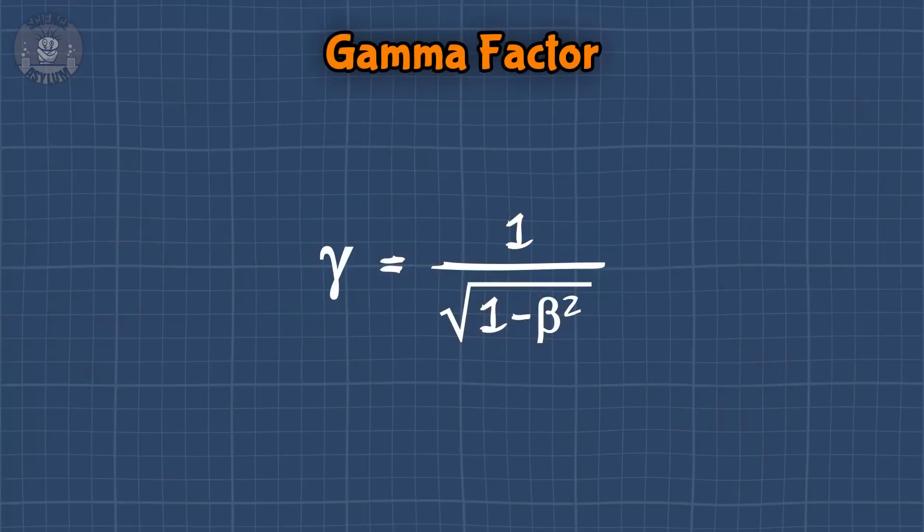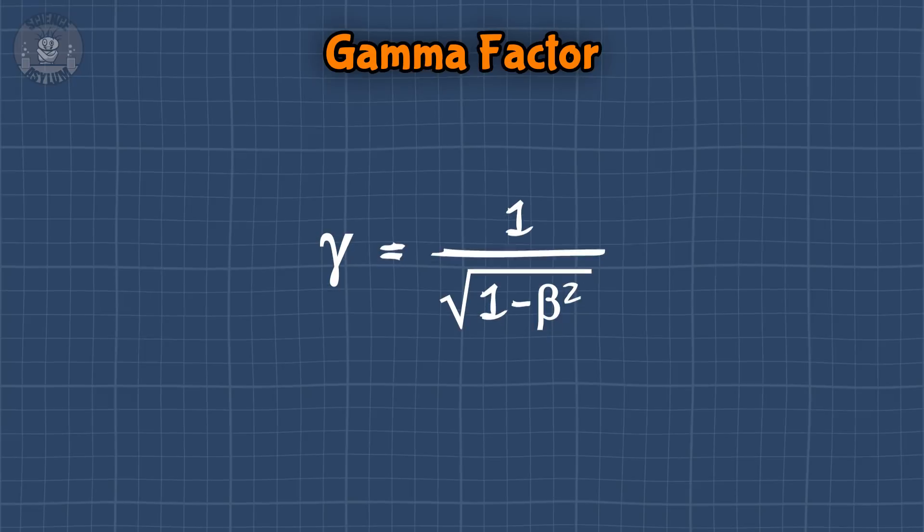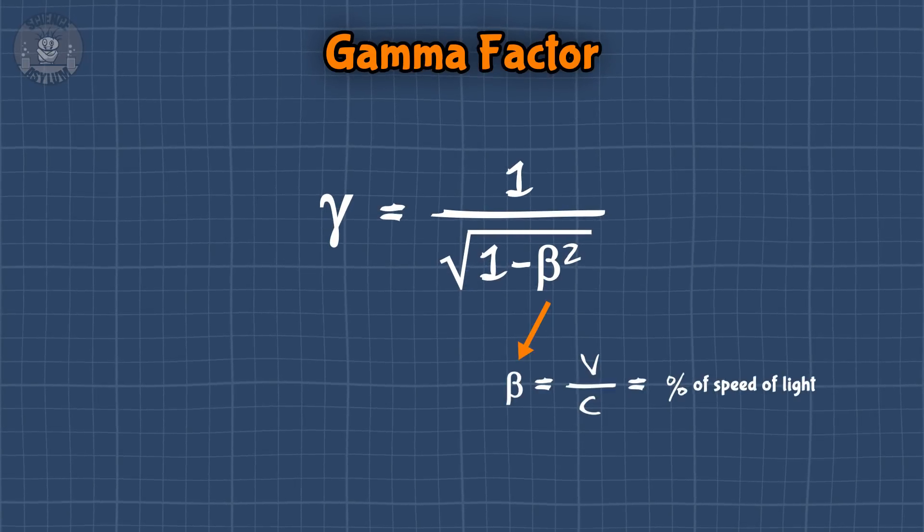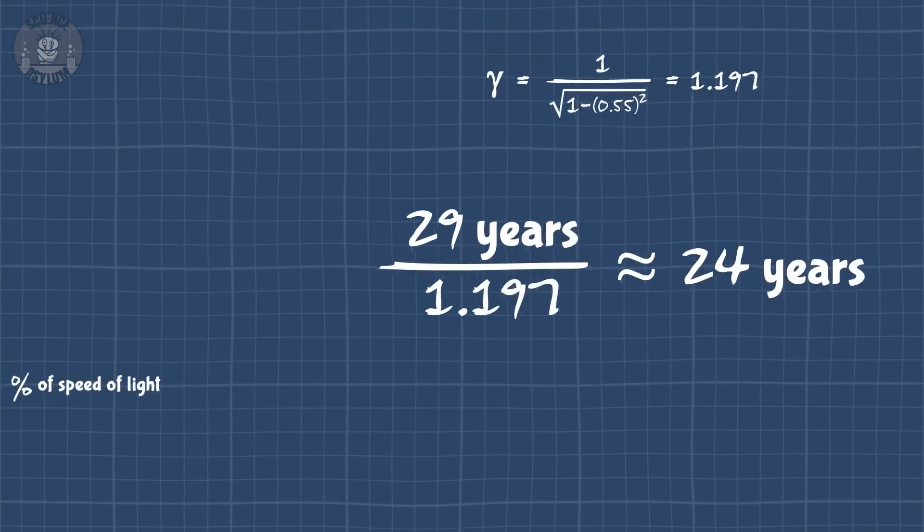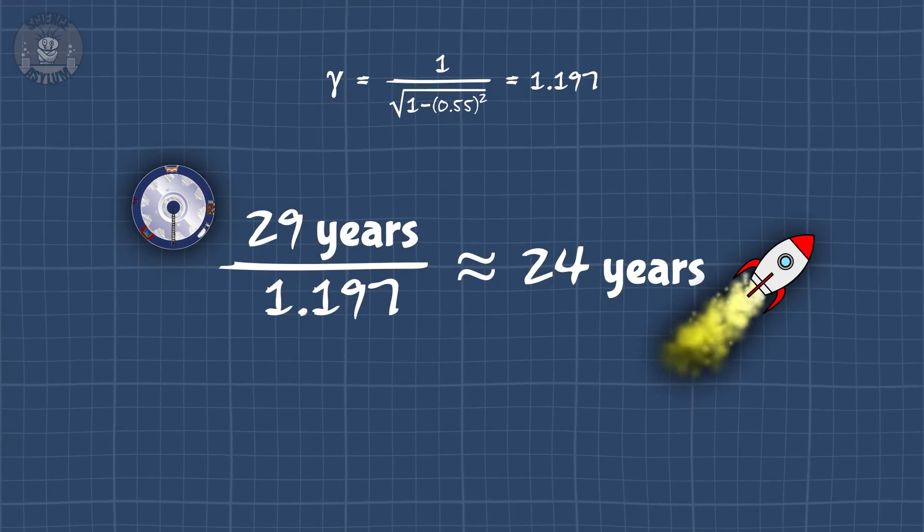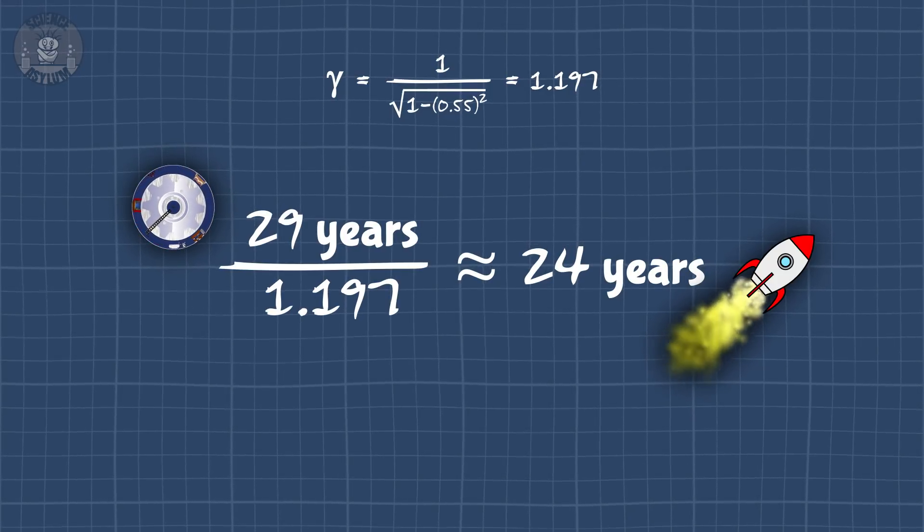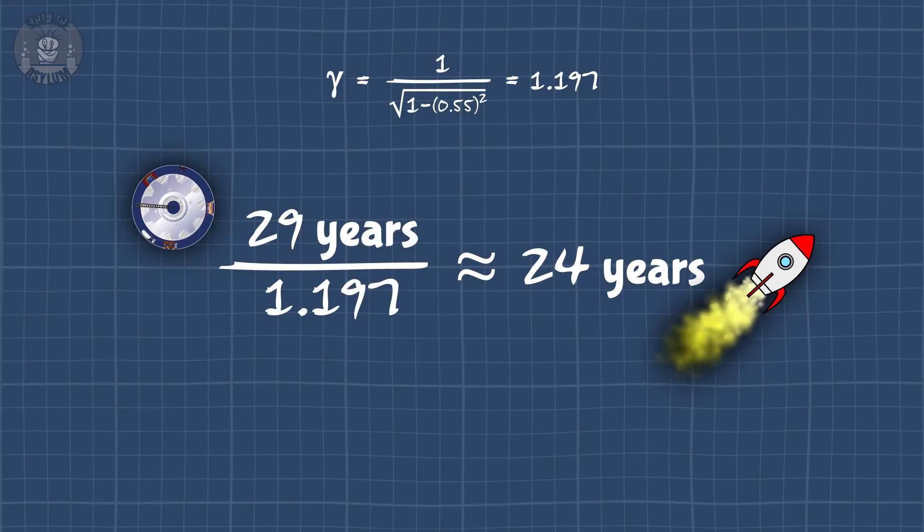A quick way to calculate the difference is by using something called the gamma factor. It's a number that shows up all over relativity, so get used to seeing it. Using that factor, I expected Rocket Clone to be only 24 years older, even though I'm 29 years older. There's no surprise on my end.